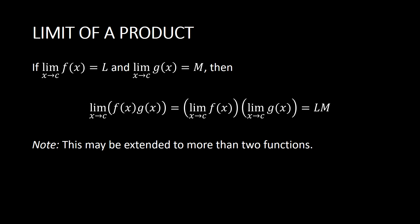Let us now have the limit of a product. If the limit of f(x) as x approaches c is L and the limit of g(x) as x approaches c is M, then the limit of f(x) times g(x) as x approaches c is equivalent to breaking up the limit of each function. So we multiply the limit of f(x) as x approaches c times the limit of g(x) as x approaches c, which equals L times M. Note that this may be extended to more than two functions.